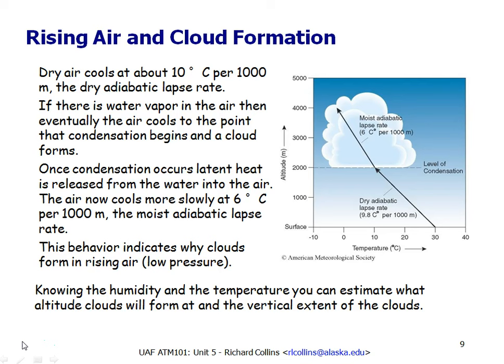The cooling of rising parcels of air explains how clouds form. As a humid parcel of air rises, the temperature drops and eventually the water vapor condenses into water droplets and a cloud forms. Thus clouds form in rising parcels of air. Air rises in low pressure systems and falls in high pressure systems. Thus we associate cloudy, rainy, stormy weather with low pressure and fair, sunny weather with high pressure. That's why the barometer has rain, change, and fair printed on the dial.